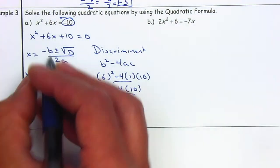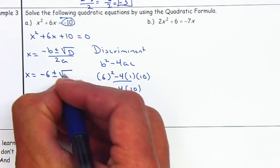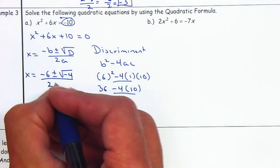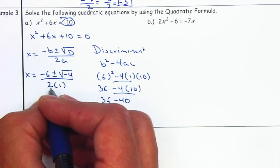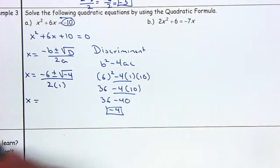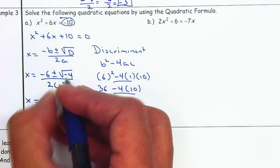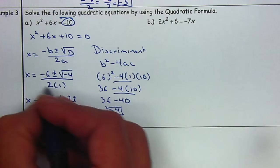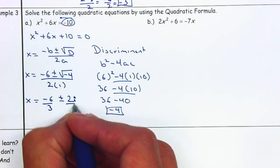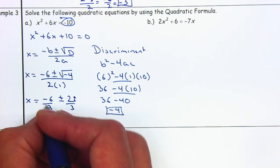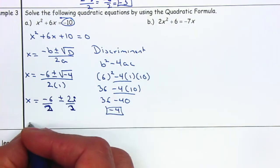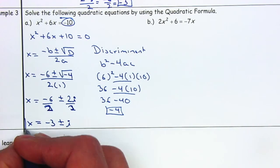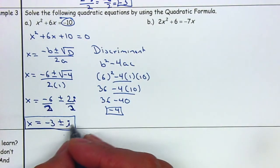So x is equal to negative 6 plus or minus the square root of negative 4, all over 2 times A, which is 1. Since we have a negative under the square root, we separate the square root of negative 4 into the square root of 4 times i, giving 2i. Separating the fractions and dividing by 2 gives x equals negative 3 plus or minus i. We don't need to separate it further since this is an imaginary number.